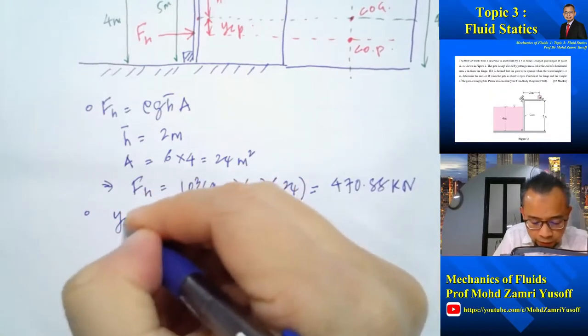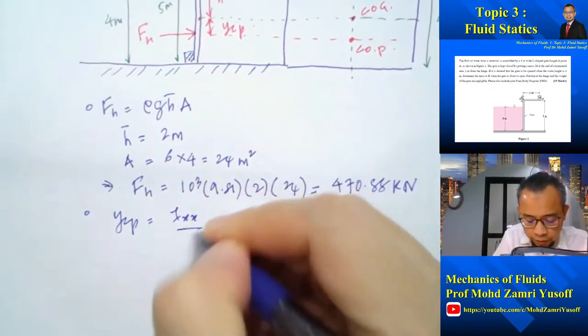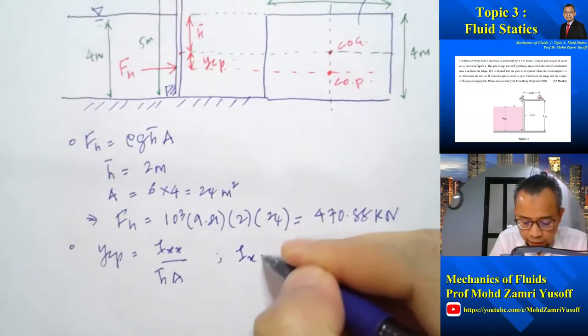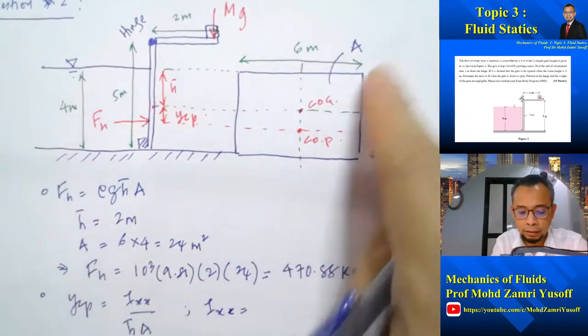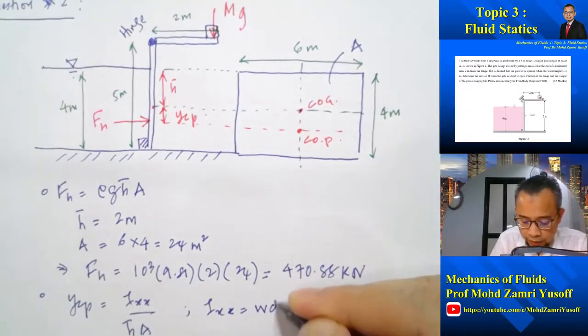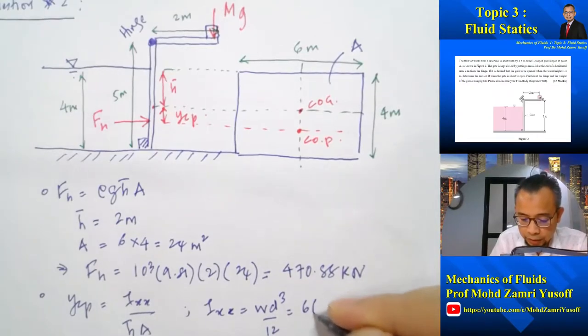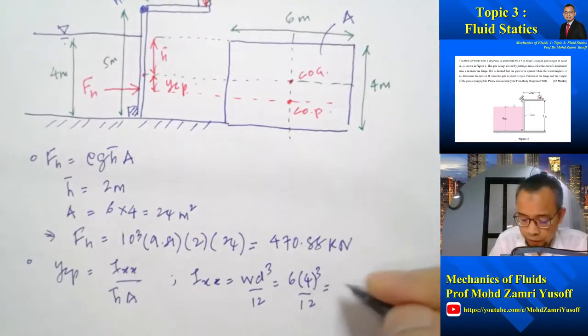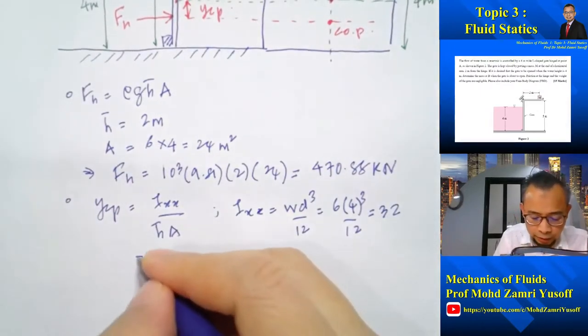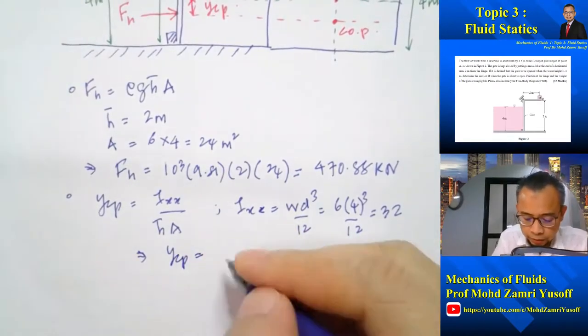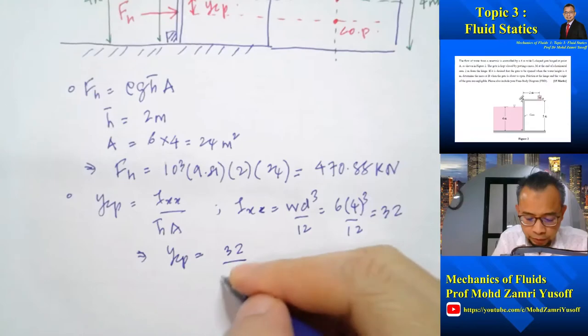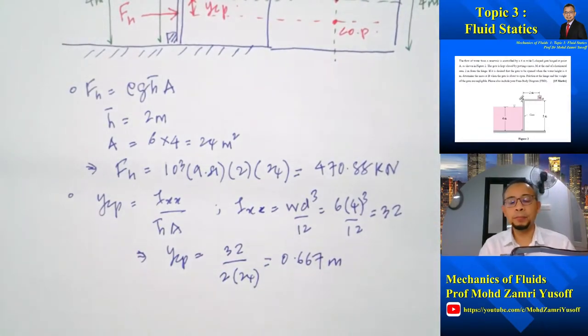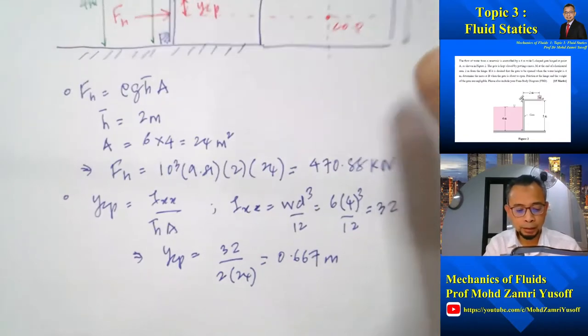Then we can calculate YCP. Formula is Ixx over h bar A because theta is 90 degrees. So then we can calculate Ixx. Ixx for a rectangle is the width multiplied by the depth cubed over 12. So 6 times 4 cubed over 12, and that gives Ixx equal to 32. So then we can calculate YCP directly. YCP is 32 over h bar is 2, A is 24. So that gives us 0.667 meters.